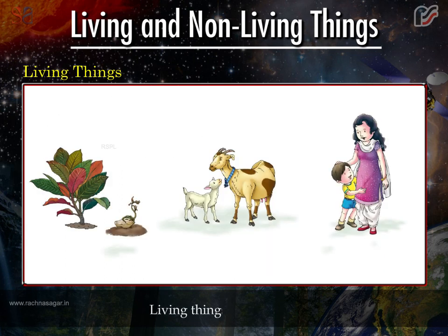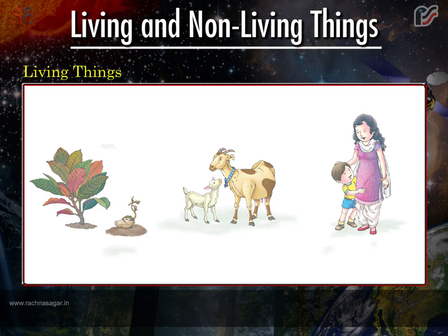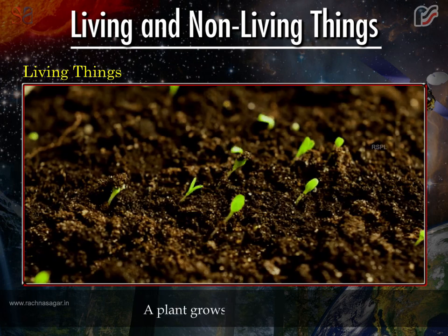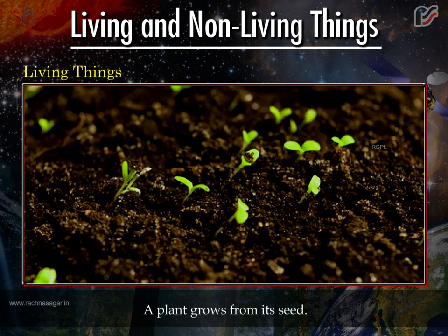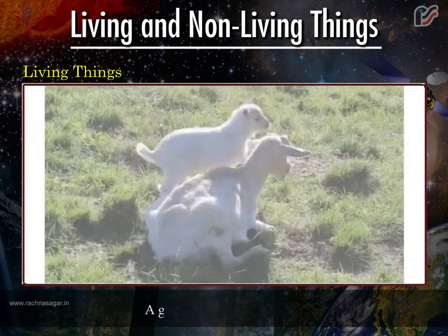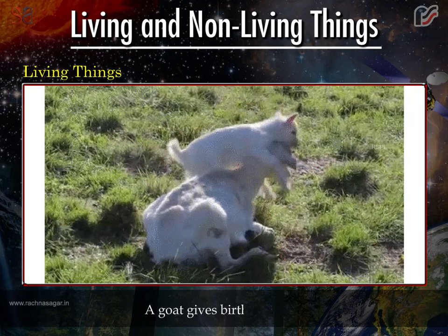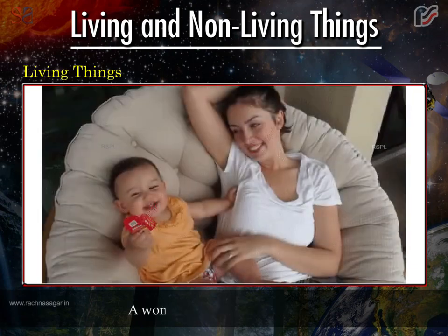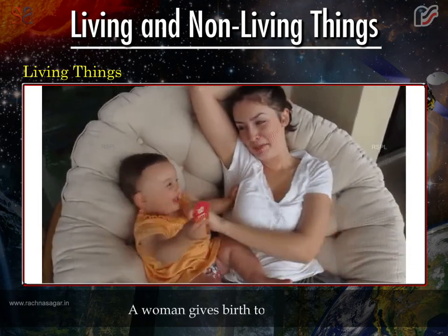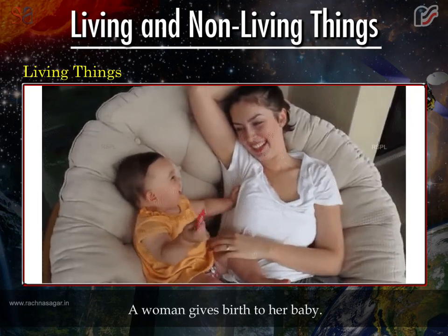Living things have babies. A plant grows from its seed. A goat gives birth to its kid. A woman gives birth to her baby.